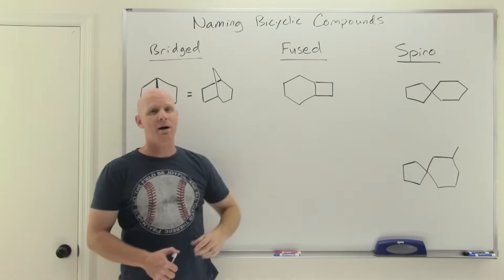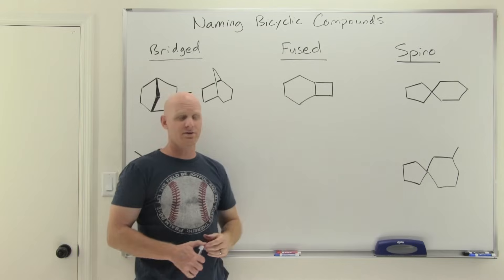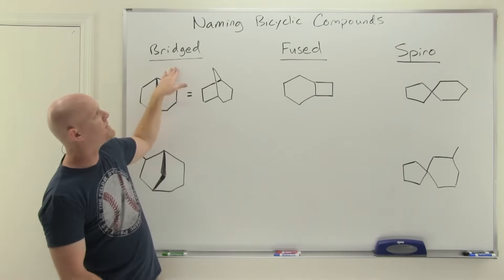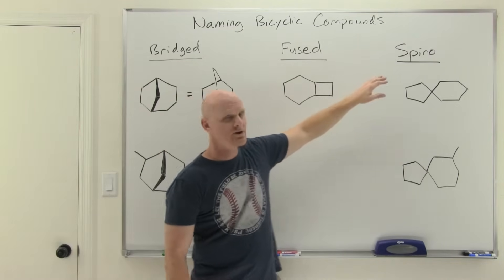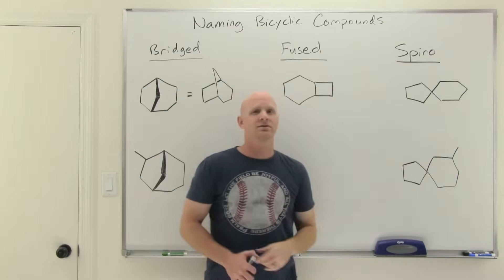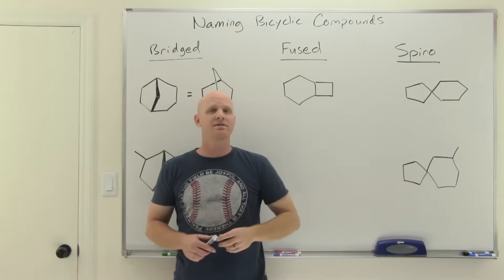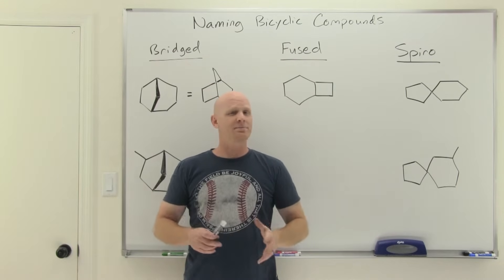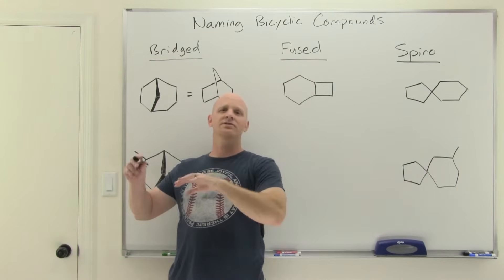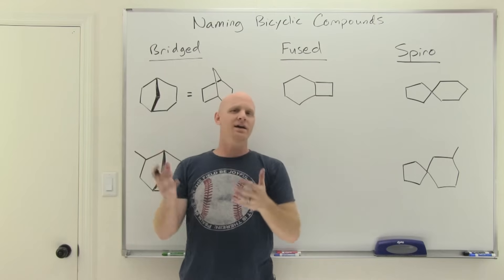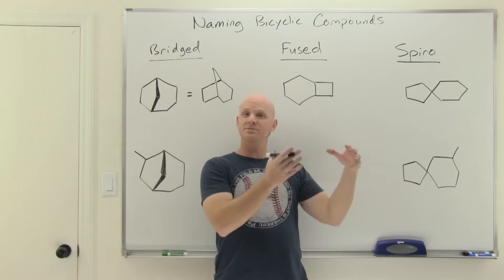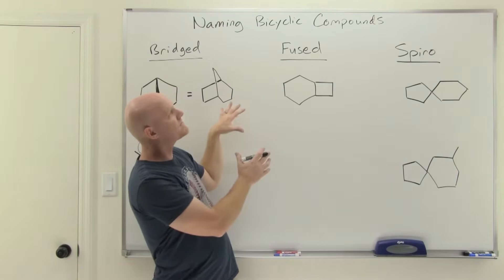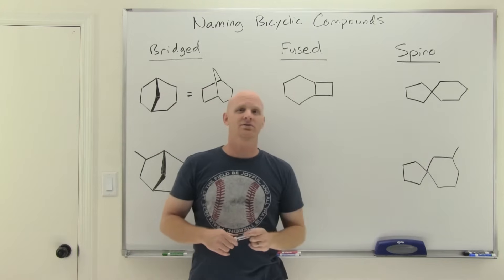Naming bicyclic compounds will be the topic in this lesson. We'll have three different variants: bridged bicyclics, fused bicyclics, and spiro bicyclics. In this chapter we've already covered naming alkanes and naming complex substituents, and this will be the last thing we need to learn how to name.